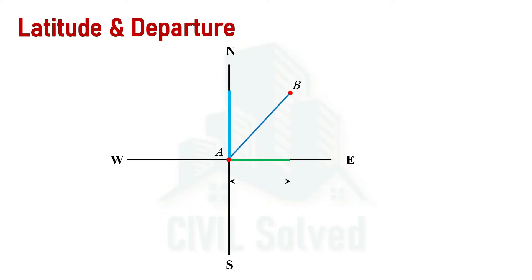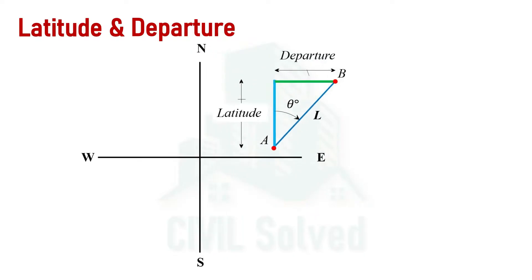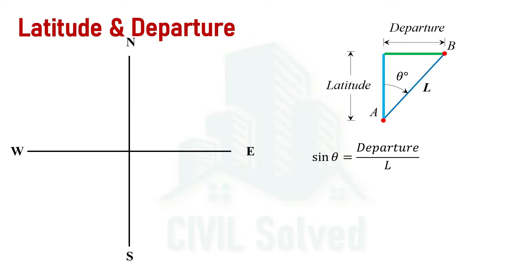Similarly, the orthographic projection of a line formed on the north-south axis is called latitude. In two dimensions, the green line shows the departure and the light blue line shows the latitude. Let's say the length of the line is L and the bearing is theta. Using trigonometric ratios, sine theta equals perpendicular over hypotenuse. In this case, the perpendicular is departure and the hypotenuse is length L, so departure equals L sine theta.